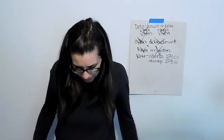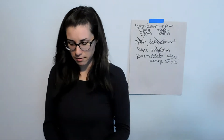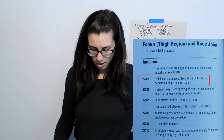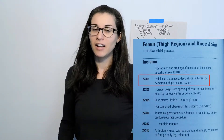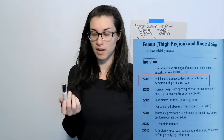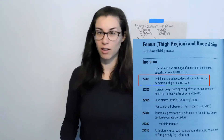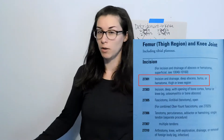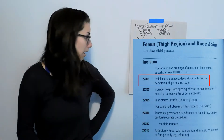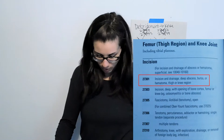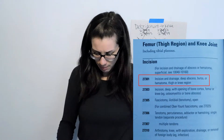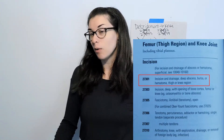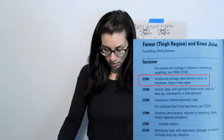Let's try them out. 27301 — so we are back to femur, thigh region, and knee joint, under incision. In the video I thought I was recording but did not record, we read through all of these and were unsure of any of them, because none of them sounded like what was in the op report. Either way, 27301: incision and drainage, deep abscess, bursa or hematoma, thigh or knee region. That was the closest we came to it.